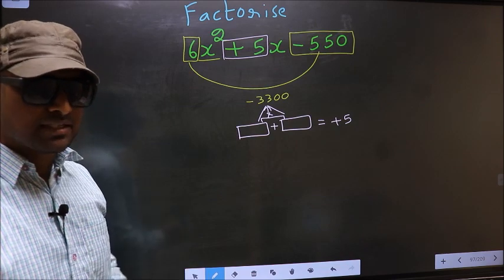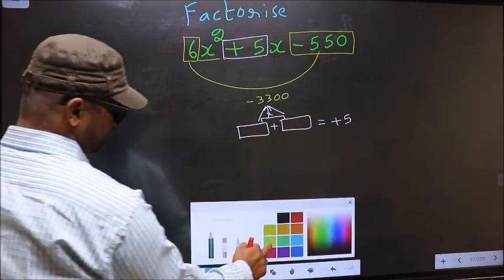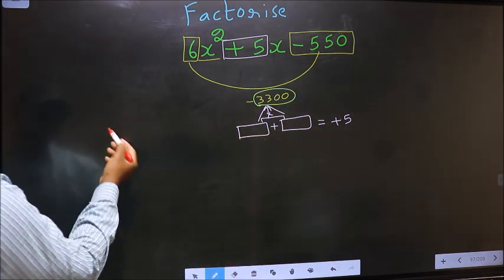To get those 2 numbers, for that we should take LCM of 3300. So the LCM we take here.